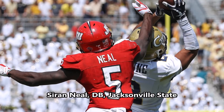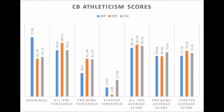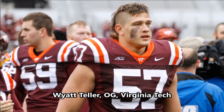Siran Neal, defensive back out of Jacksonville State: his production data is 52.16 in solo tackle data and 70.20 in pass-deflection data — at a lower-level division, so take this with a grain of salt. The solo tackle data is a bit concerning, but the pass-deflection data is reasonably decent. Athleticism-wise, he has some impressive traits: 97.30 in explosiveness, 62.19 in speed, and 65.13 in flexibility. He's close to Pro Bowl potential as a cornerback/defensive back prospect, with very impressive explosiveness. He has a good chance to become a long-term starter to Pro Bowl player from an athleticism standpoint.